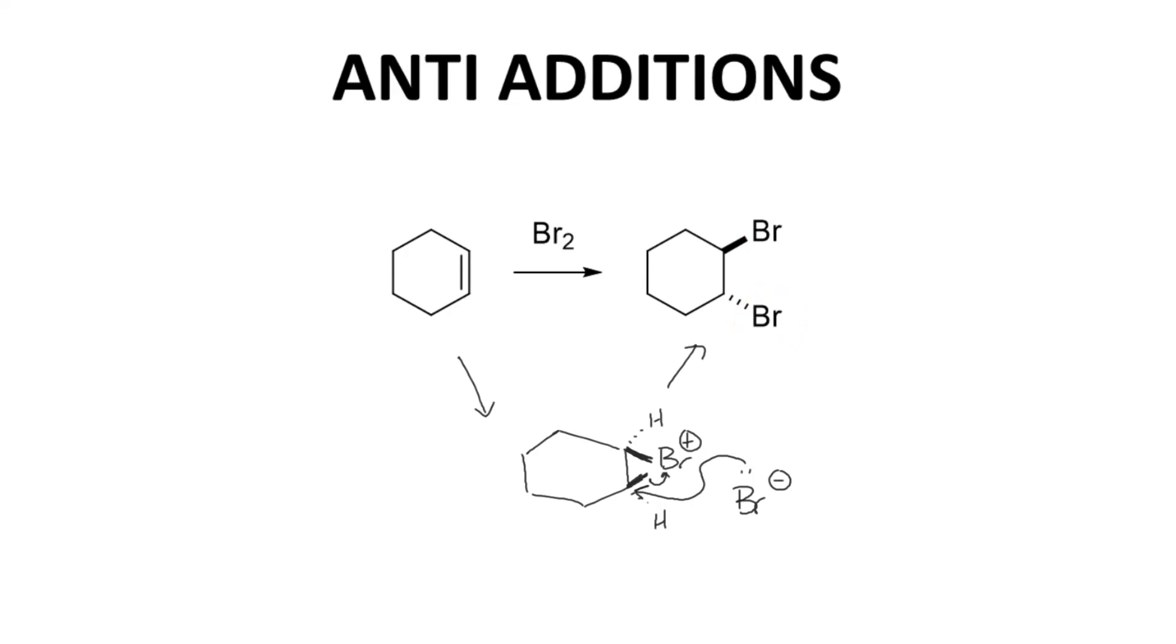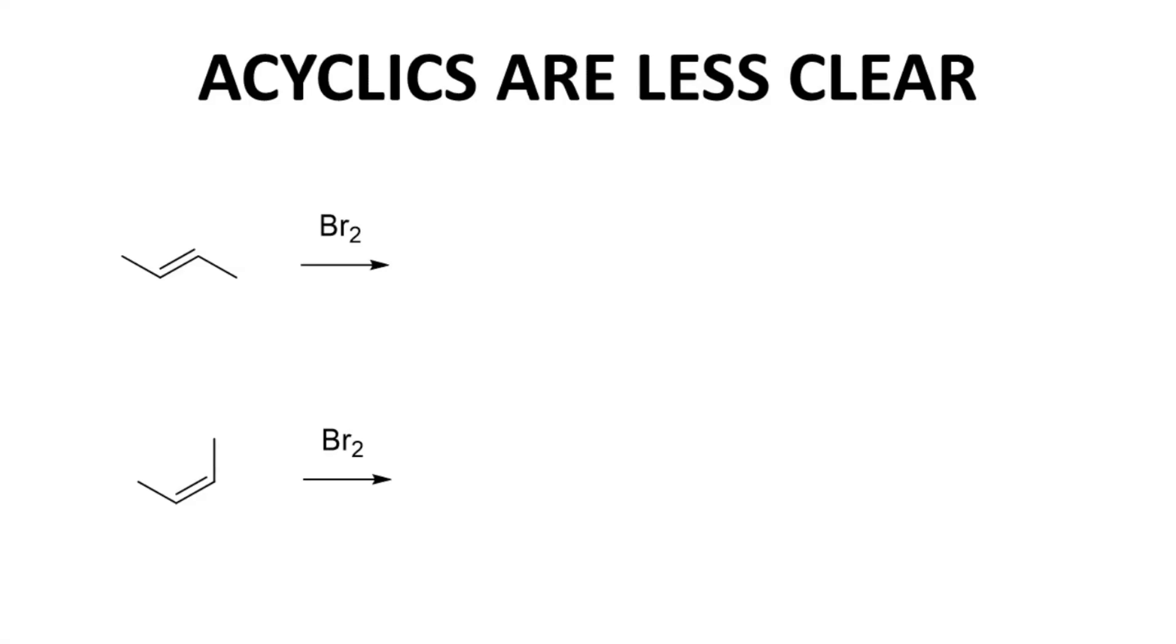Cyclic alkenes are perfect for highlighting this anti-addition because the ring has a clear top and bottom. When we look at this reaction on acyclic alkenes, the stereochemistry gets a bit more complex.